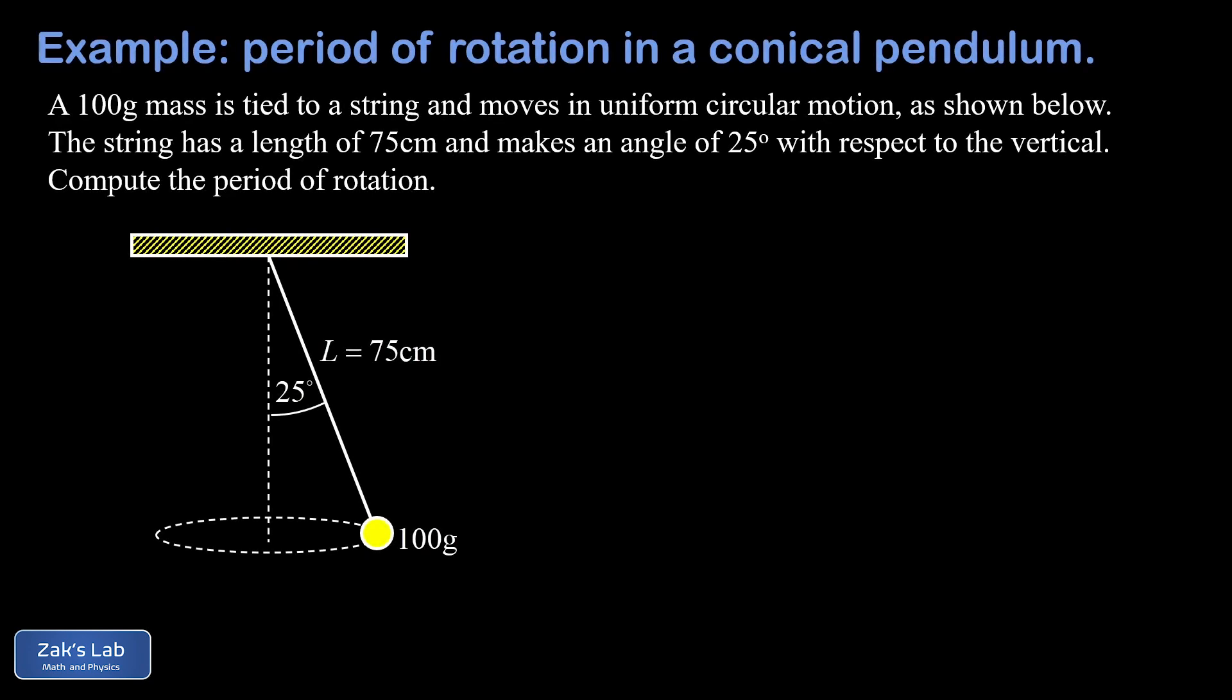In this video we're solving a conical pendulum. In the conical pendulum we have a simple pendulum with a string and a pendulum bob, and that pendulum bob is going to trace out a horizontal circular path. As that pendulum bob revolves around, the string traces out the surface of a cone, which is why this is called a conical pendulum. In the problem we're given the angle between the vertical and the angle of the string, and that's 25 degrees. We're given the length of the string as 75 centimeters and the mass of the pendulum bob. What we're trying to find here is the period of rotation.